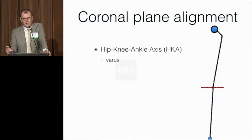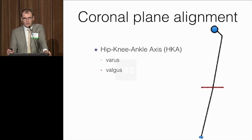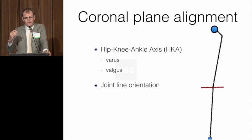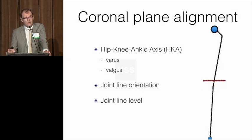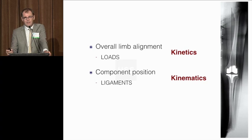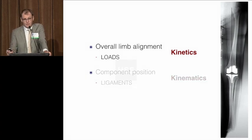It is very important to realize the difference between the HKA axis, which gives us coronal alignment and can be varus or valgus, and the joint line orientation. Joint line orientation can change independently of the HKA axis — that is a very important insight. Also in knee arthroplasty, the joint line level can change after the operation compared to the pre-op setting. Overall limb alignment will mainly affect kinetics, whereas individual component position might play a bigger role in kinematics and stability. That might be the true game changer.